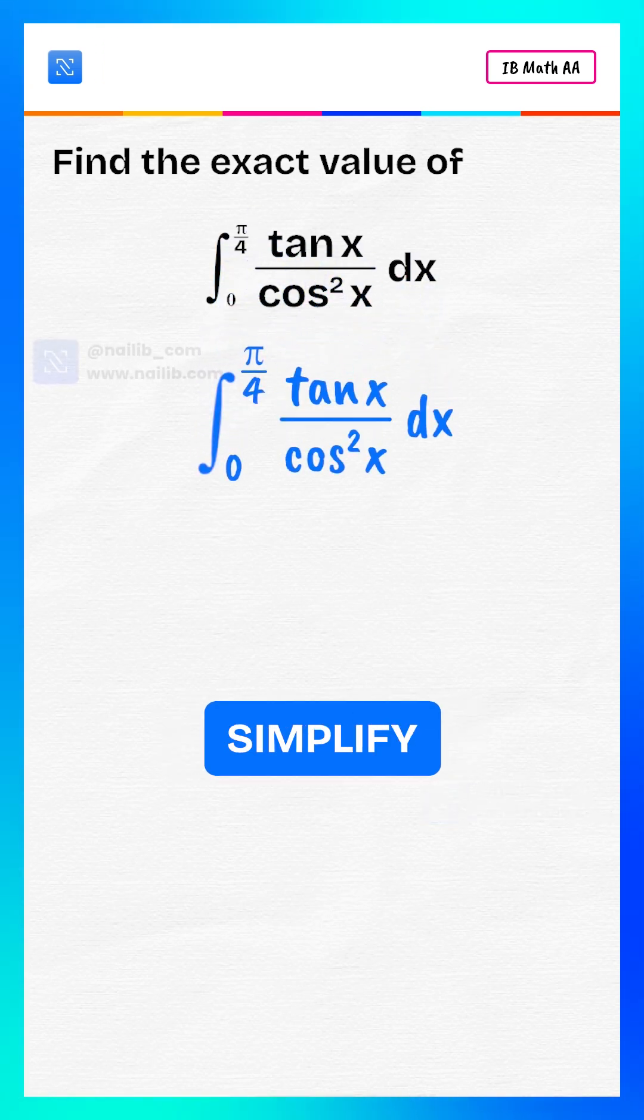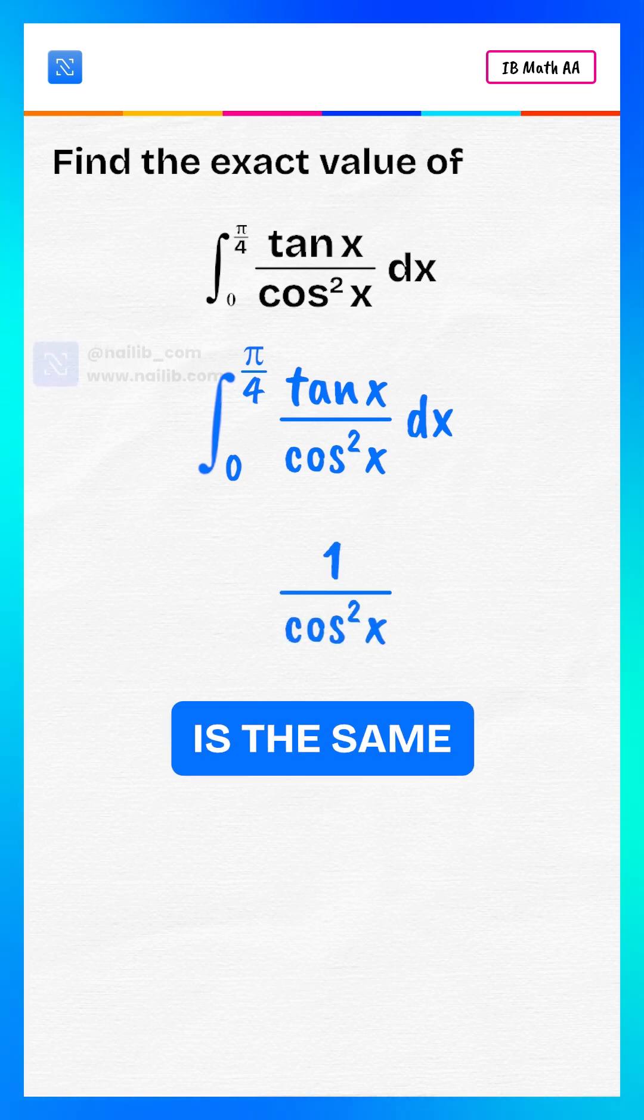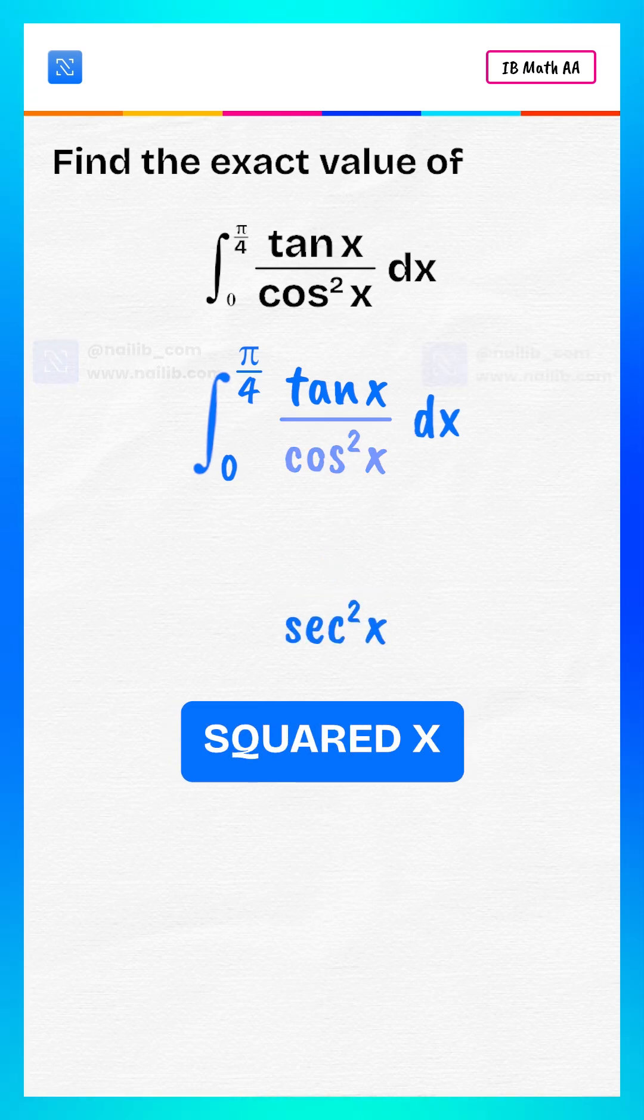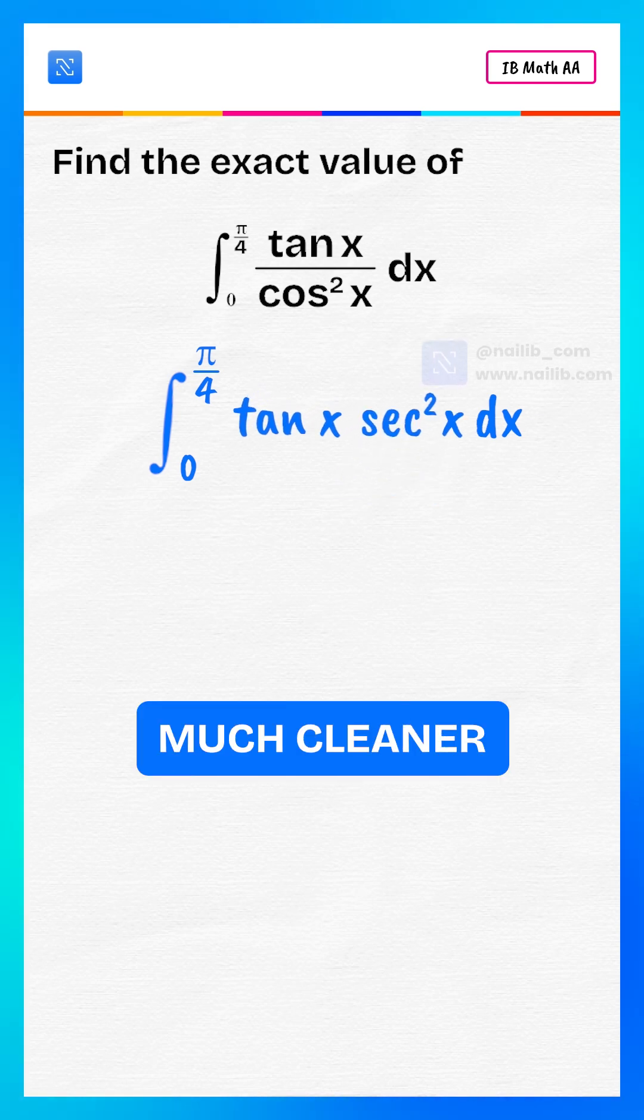All right, let's simplify this first. We know that one divided by cosine squared x is the same as secant squared x. That already looks much cleaner, and this form is perfect for substitution.